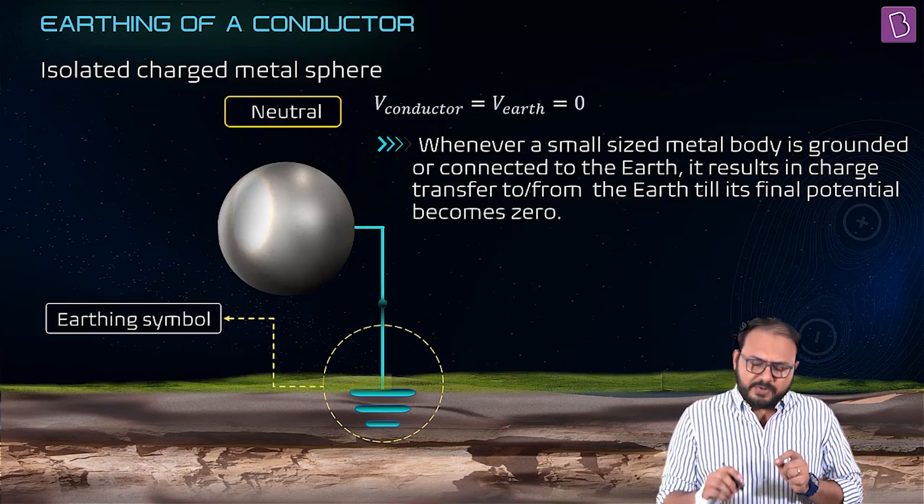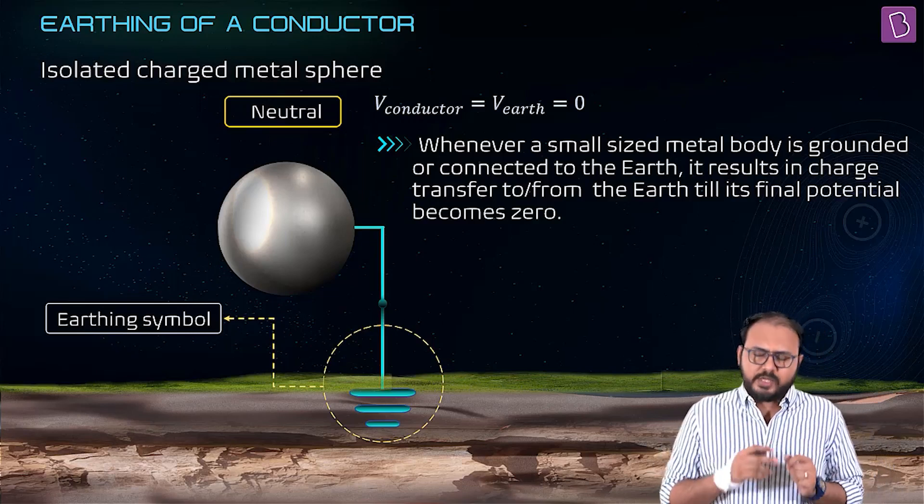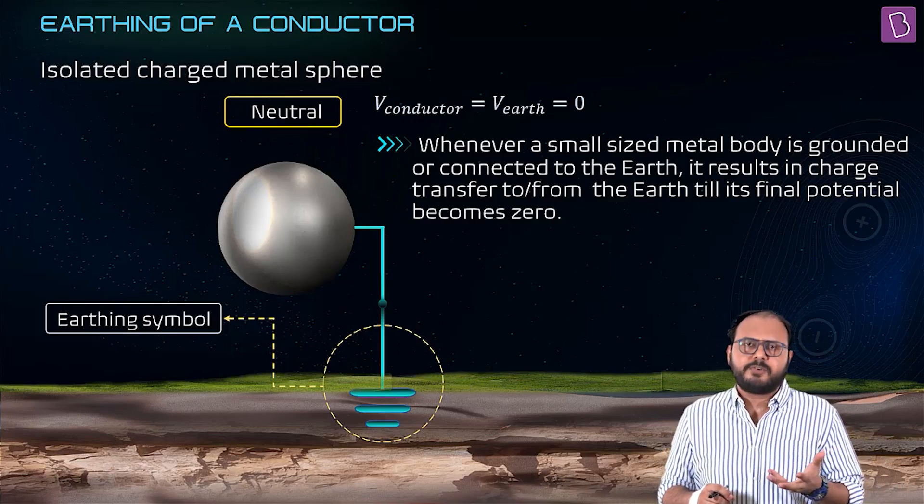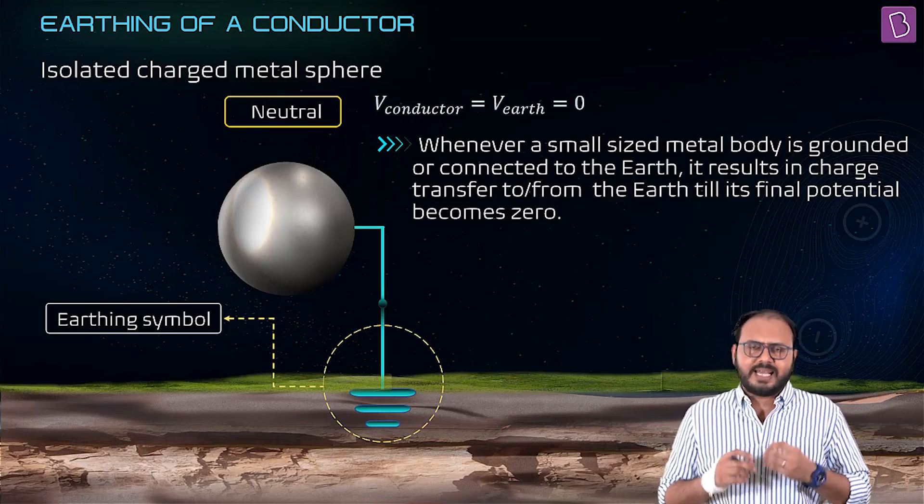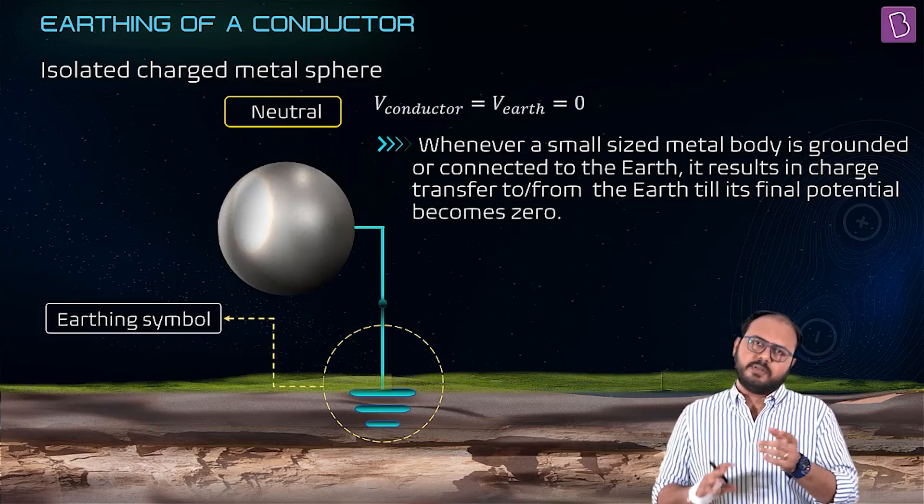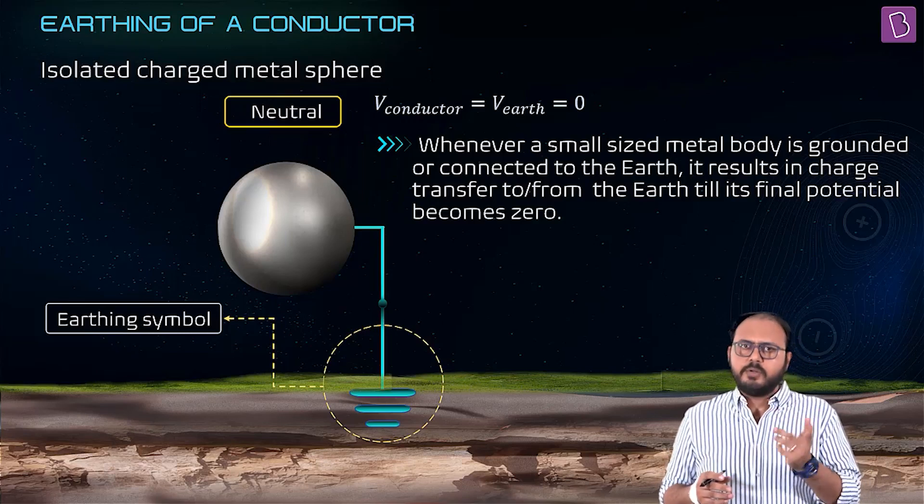The definition is there on the screen: V conductor equals V earth equals V zero. Whenever a small size metal body is grounded or connected to the earth, it results in charge transfer. Why will the charge transfer happen? Very good.